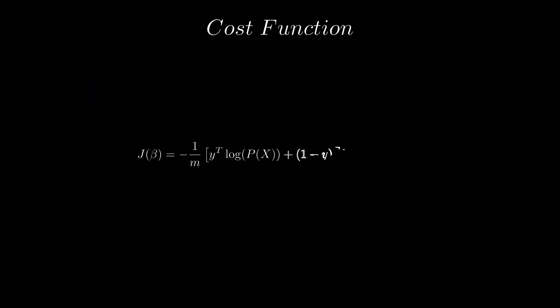And we call this the cross-entropy loss. And the gradient with respect for the coefficients and the intercepts looks like this.